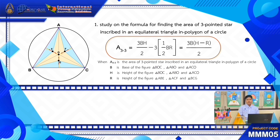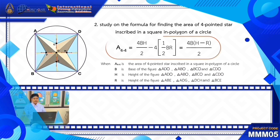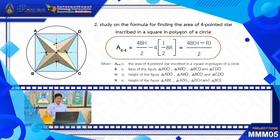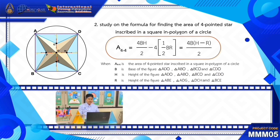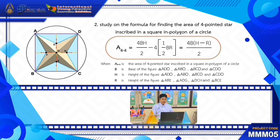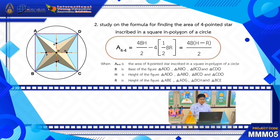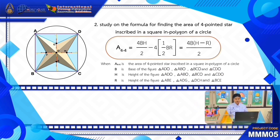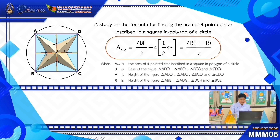The study on the formula for finding the area of a four-pointed star in a square inscribed in a circle: A4 equals one-half times 4 times B times H, minus 4 times one-half times B times R. So A4 equals one-half times 4 times B times the quantity H minus R. Where A4 is the area of the four-pointed star in a square inscribed in a circle, B is the base of the first triangles, and H is the height between center and perimeter.